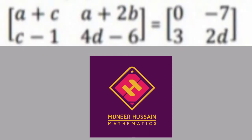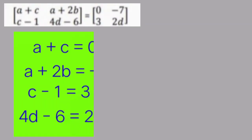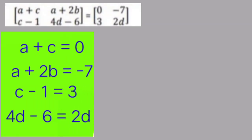Since the given matrices are equal, so their corresponding elements are also equal. So we have four equations: A plus C is equal to 0, C minus 1 is equal to 3, A plus 2B is equal to minus 7, and 4D minus 6 is equal to 2D. First of all, we shall take the equation of single variable, i.e. C minus 1 is equal to 3. So C is equal to 3 plus 1, i.e. C is equal to 4.